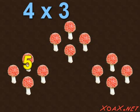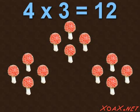Then we get 1, 2, 3, 4, 5, 6, 7, 8, 9, 10, 11, 12 toadstools again, just as we had before. So the product of 4 times 3 is 12.